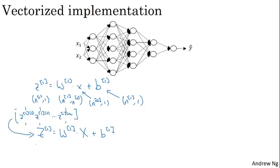So the dimension of z1 is that instead of being n1 by 1, it ends up being n1 by m, if m is the size of your training set.